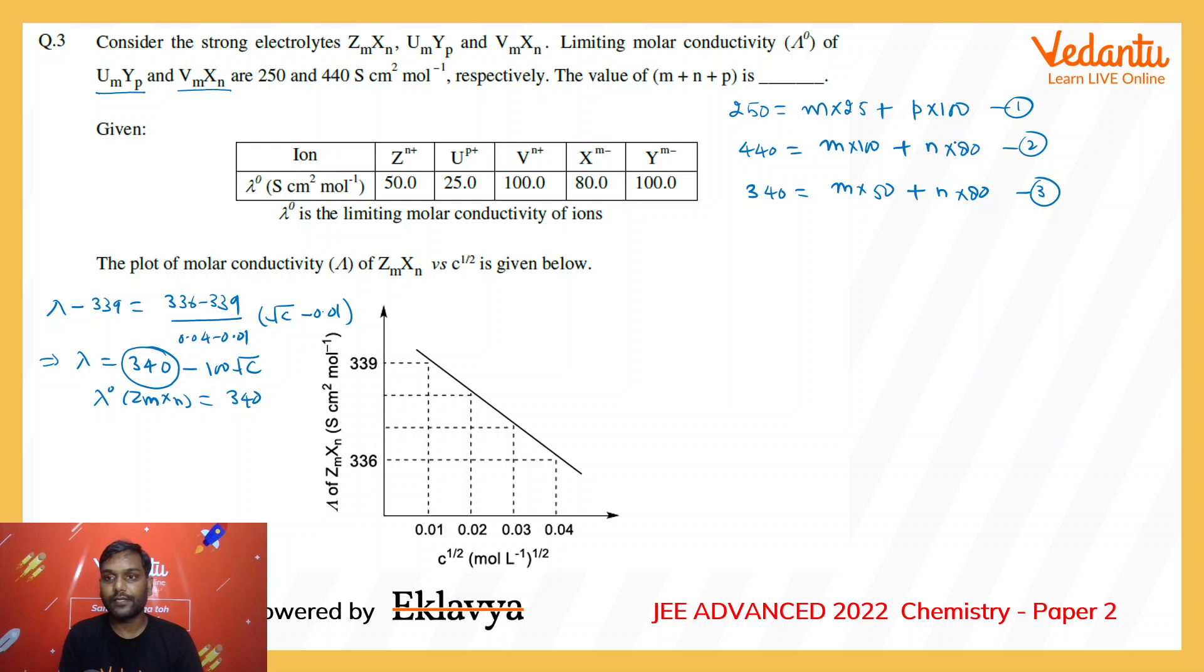If we subtract equations 2 and 3, we get 100 = 50M, which implies M = 2. Substituting M = 2 in the second equation, we get N = (440 - 200)/80 = 240/80, so N = 3.